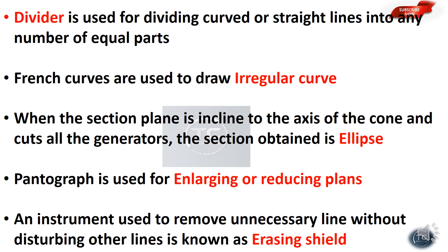When the section plane is inclined to the axis of the cone and cuts all the generators, the section obtained is an ellipse.